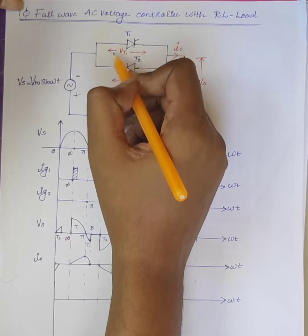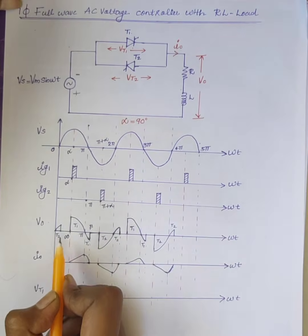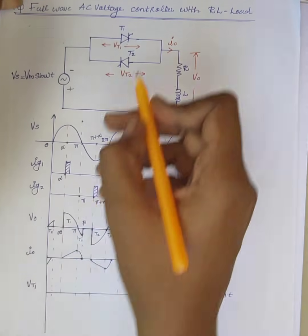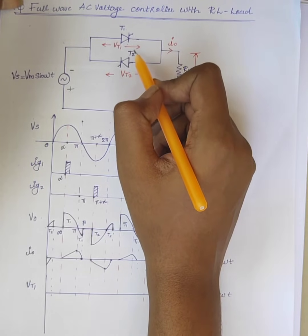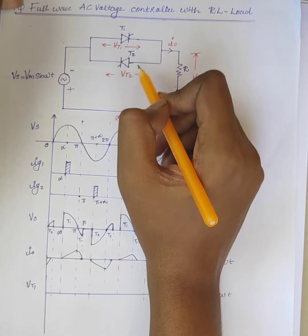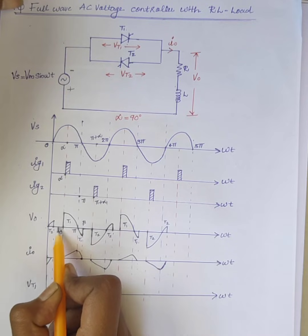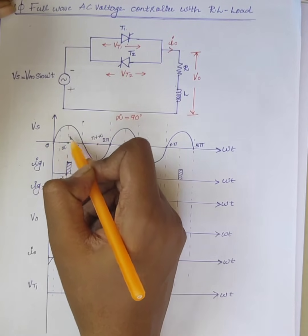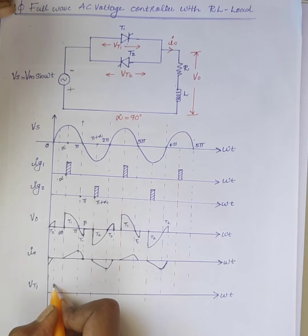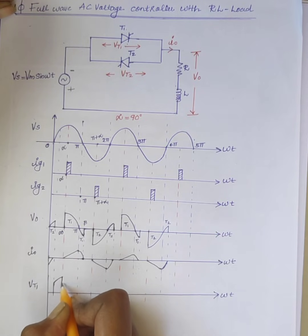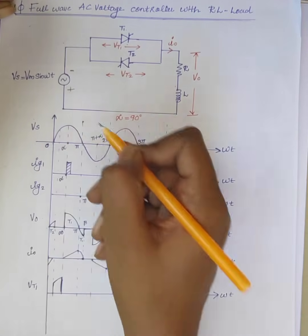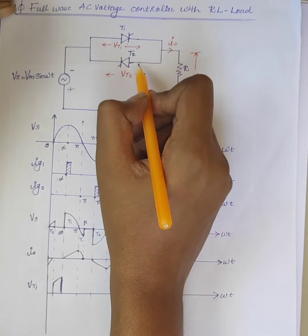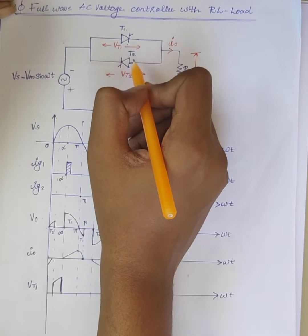Next is the voltage across thyristor T1, VT1. From the output voltage waveform, it is clear that from 0 to the point where one of the SCRs is in the on state, both are connected in anti-parallel, therefore the voltage across switches T1 and T2 is 0. From that point to alpha, both SCRs are in the off state, so this portion of the supply voltage appears across switch T1. From alpha to beta, one of the SCRs is in the on state, so it acts as a short circuit, and the voltage across T1 and T2 is 0.